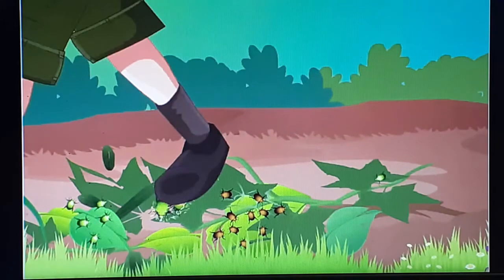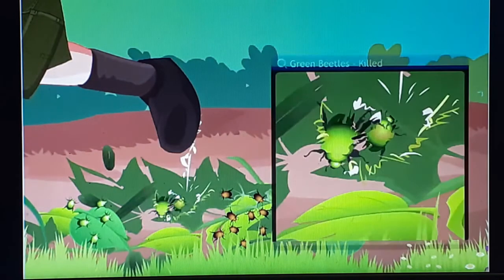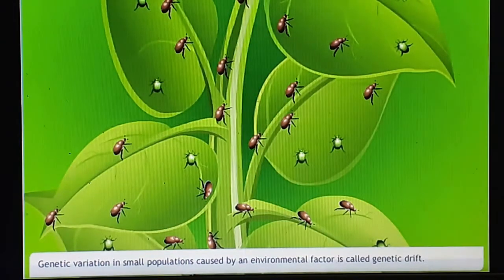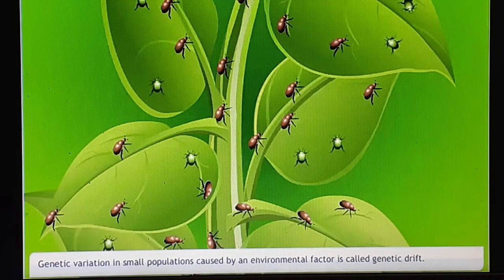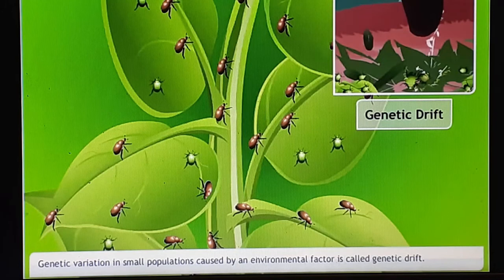Now let's look at another situation. In a sample of green and brown beetles, several green beetles are killed when a man steps onto the bushes where the beetles are feeding. This results in a greater number of brown beetles in the next generation. Accidents in small populations can change the frequency of some genes. This genetic variation in small populations caused by an environmental factor is called genetic drift.